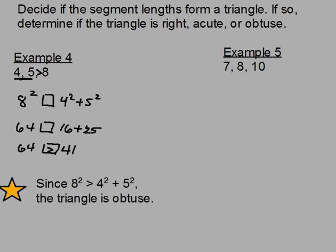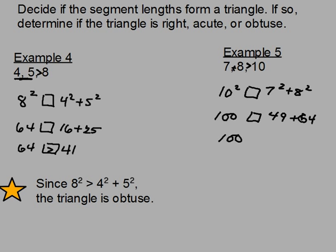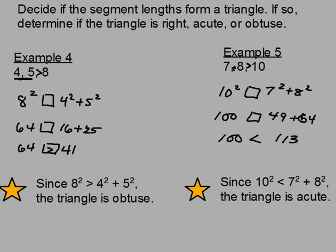For example five, I've got sides of seven, eight, and ten. Seven plus eight is fifteen, which is definitely greater than ten, so we have a triangle. Now for the type: ten squared is 100, and seven squared plus eight squared is 49 plus 64, which equals 113. Since 100 is less than 113 — C squared is less than A squared plus B squared — this triangle is acute.